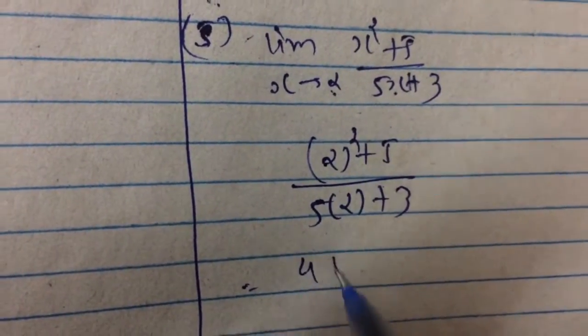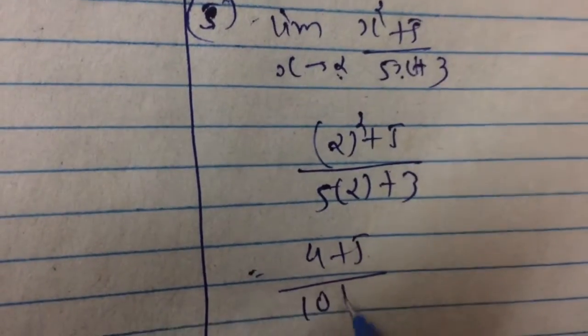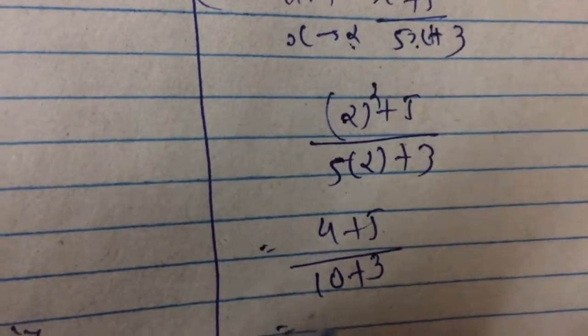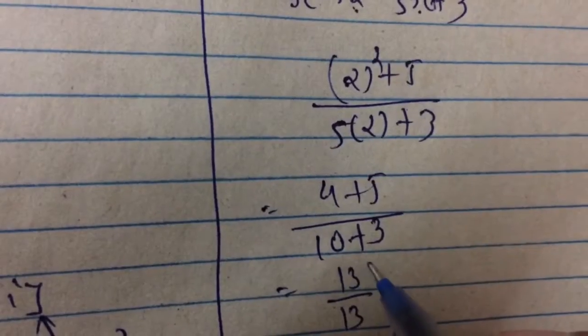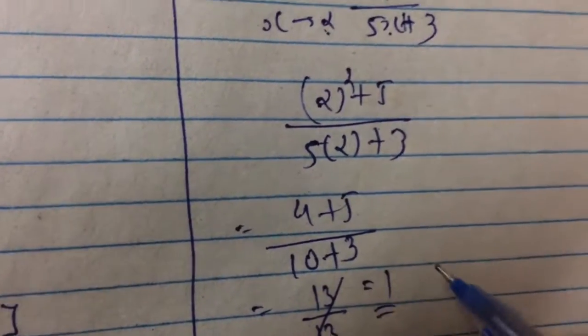And now 2 squared, that is 4 plus 5, 5 into 2 is 10 plus 3. 4 plus 5, that is 9, divided by 13. Wait, 13 divided by 13, and they cancel. Our result, that is 1.